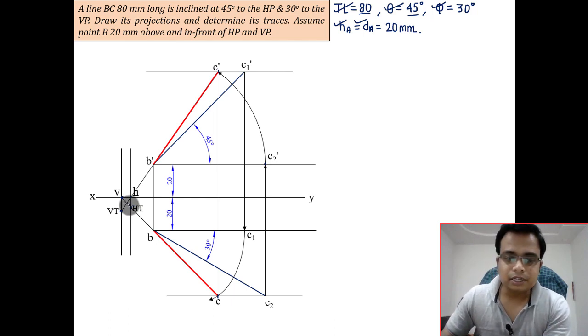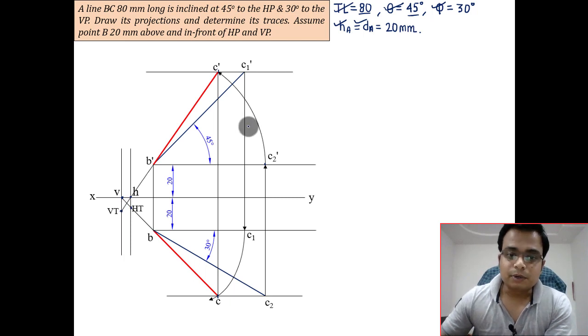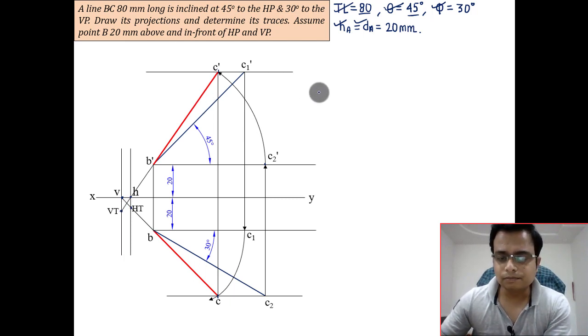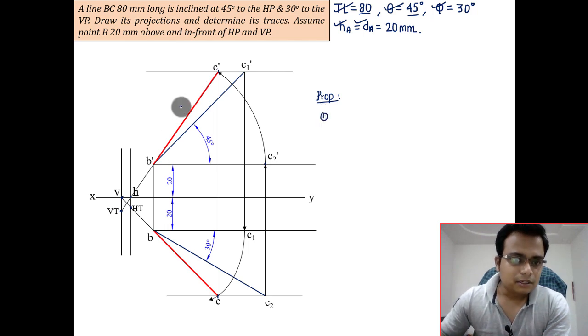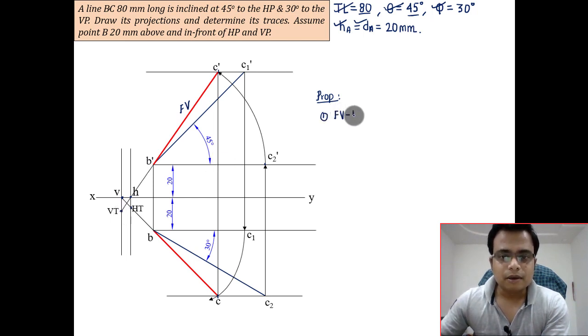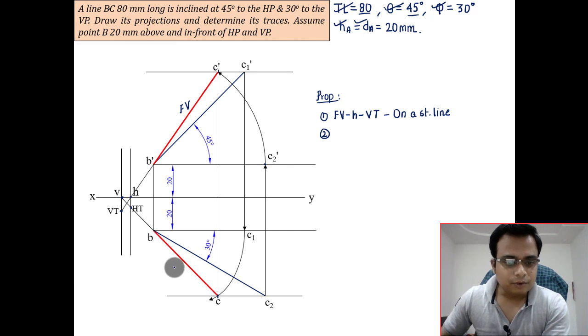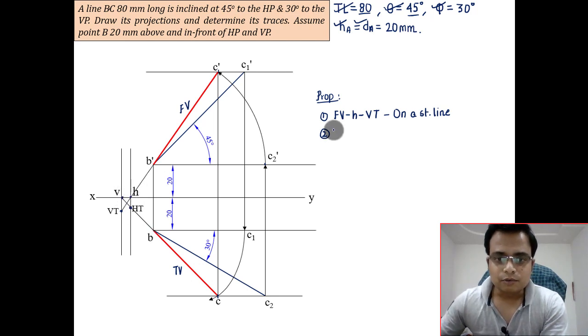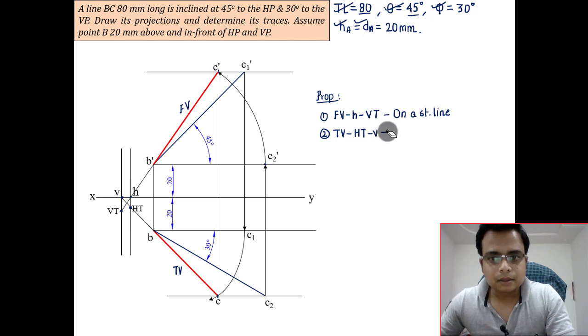There is something very interesting which we can conclude from this particular problem. Let me call it as a property and state them one by one. Number one: this is the front view, then we have H, and then we have VT, all of them lying on a straight line. So you can write front view, H, and VT, all of them on a straight line. The second property is that this red color line CB is the top view. We've got top view, we've got HT, and V. Again, all of them lie on a straight line.